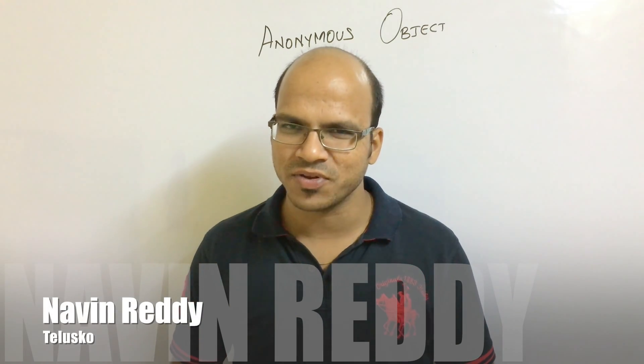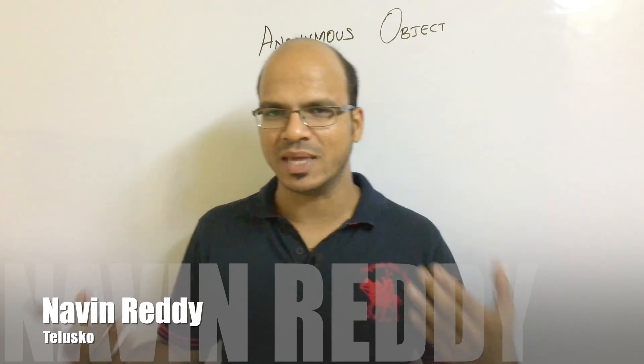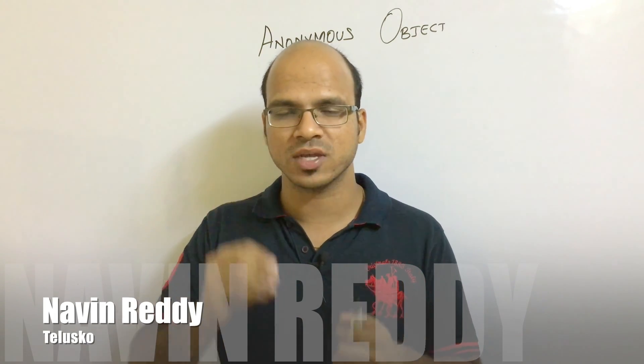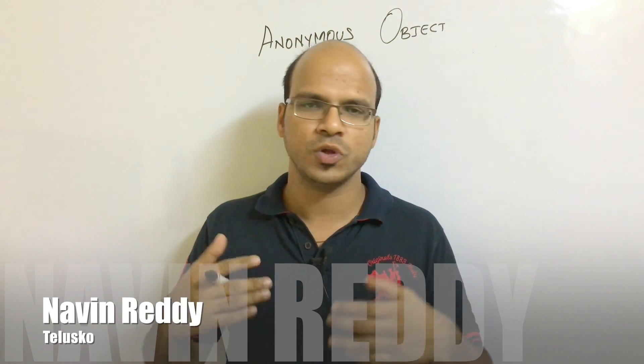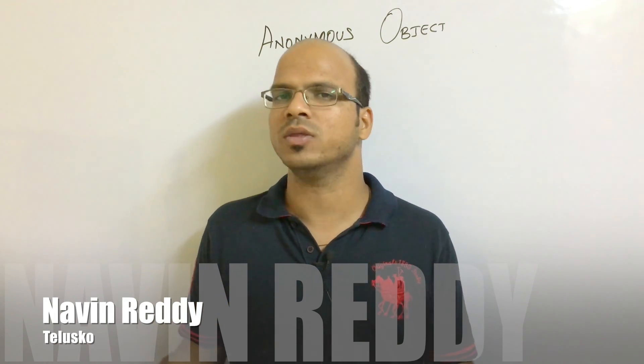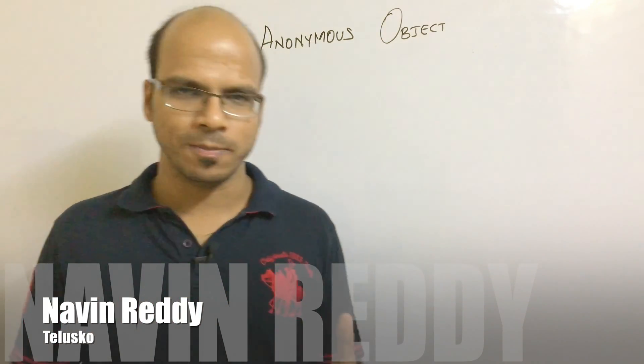Welcome back — this is Narvin Reddy from Tullescore Learnings. In this video we'll talk about anonymous objects. Anonymous means we don't know the name of something. For example, when you read books and the author is anonymous, we simply say we don't know — or don't want to reveal — the author. So we have a concept called the anonymous object.